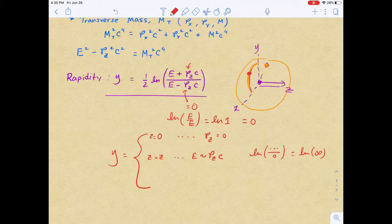So you have a natural log of infinity essentially, which basically gives you infinity here. So you get a rapidity of infinity. So when the particle is moving in the positive direction of the beam axis, it becomes infinity.